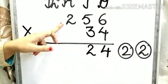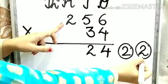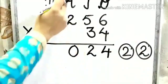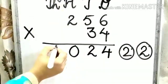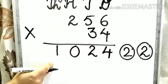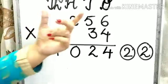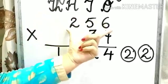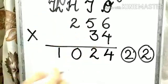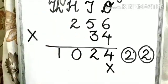Now 4 times 2 is 8, 8 plus 2 is 10. So we will write 0 under the 100s column and 1 will come under the 1000s column. Now we have multiplied 256 by 4, so we need to put a cross over here.